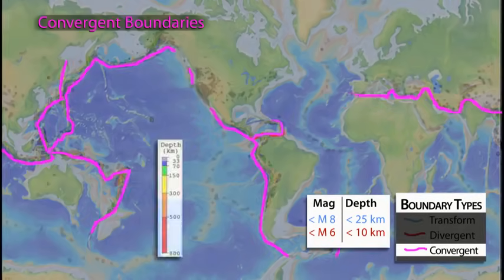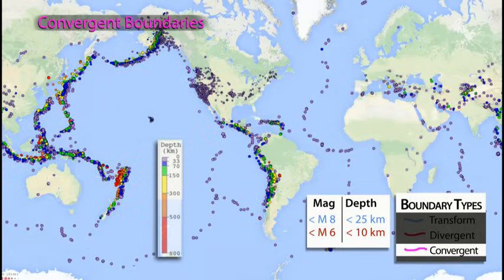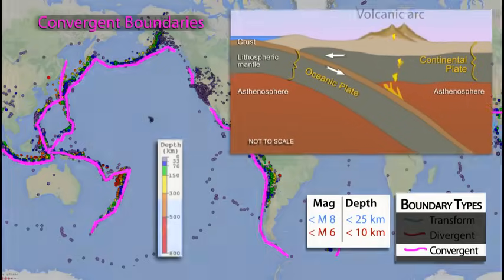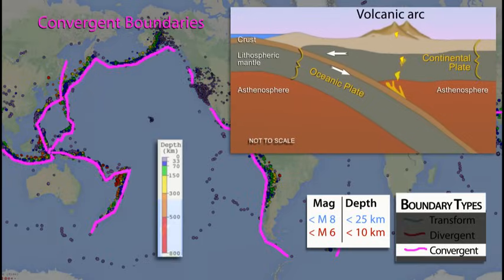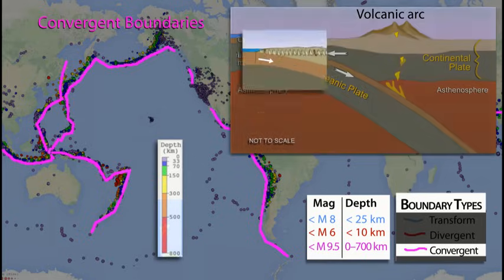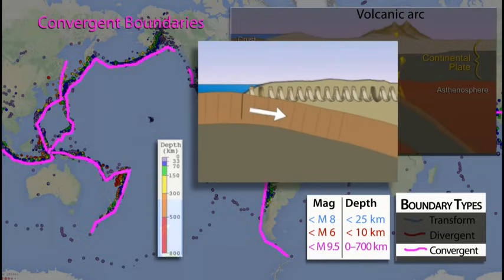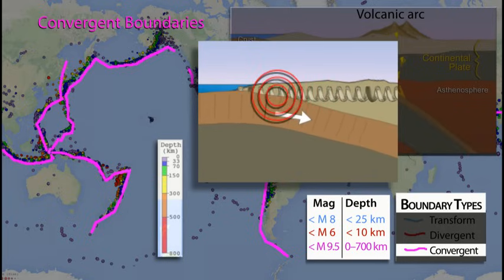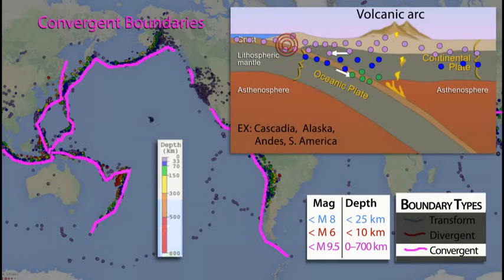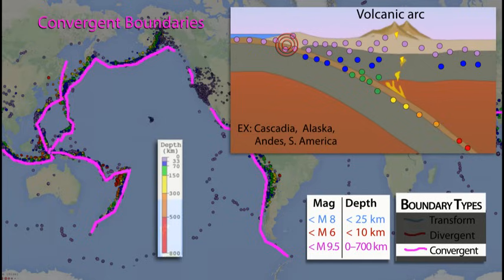More than 75% of all earthquakes occur on or near convergent boundaries. Here, an oceanic plate is forced beneath the continental in a process called subduction. The world's largest earthquakes occur near the shallow edge of the boundary where magnitude 9's have been recorded. At this location, stress builds up over tens to hundreds of years until it releases like a spring and can produce tsunamis. A broad zone of shallow earthquakes occurs within the overriding plate due to compressive forces near the convergent boundary. Earthquakes can reach depths of 700 kilometers within the subducting plates because the oceanic plate can remain cold and brittle as it dives into the deeper mantle.